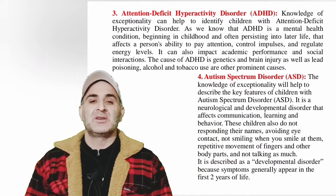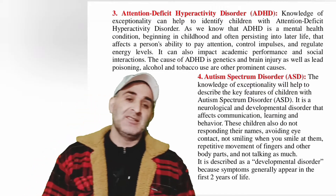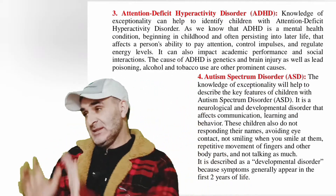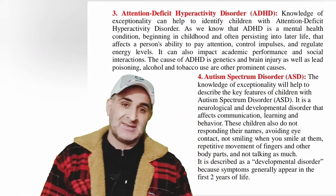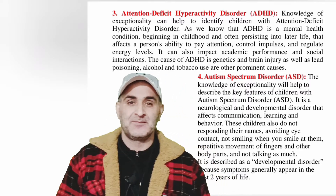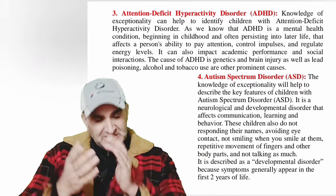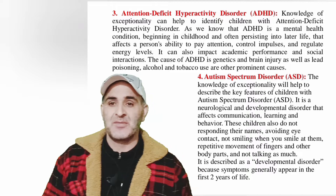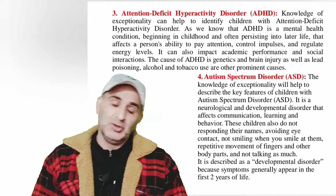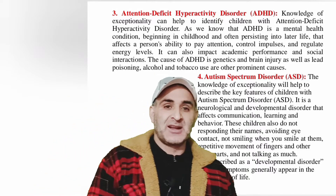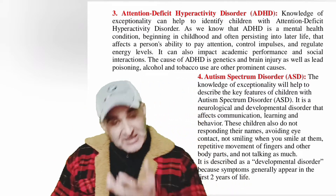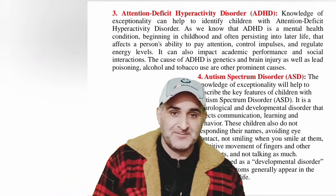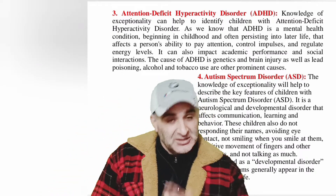Number four: Autism Spectrum Disorder, abbreviated as ASD. This disorder is also called a neurological disorder — a disorder related to the nervous system. ASD disorder affects communication and learning of the children.